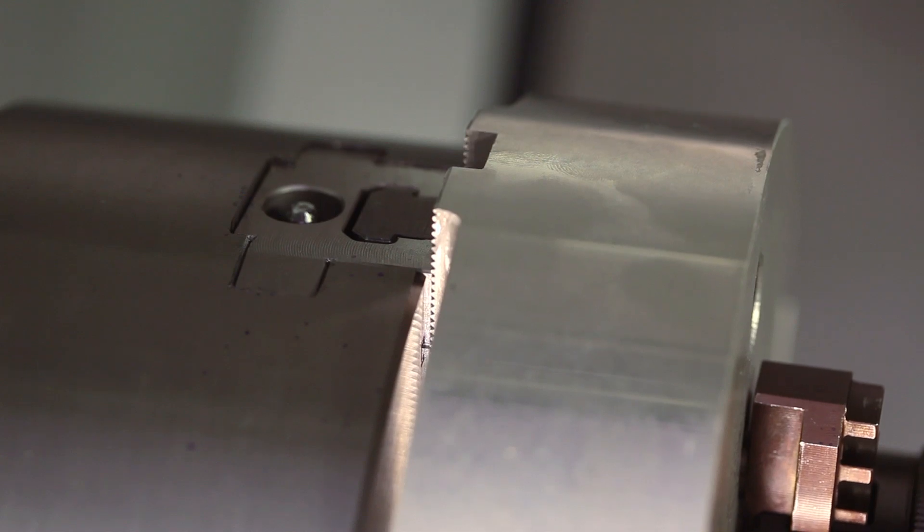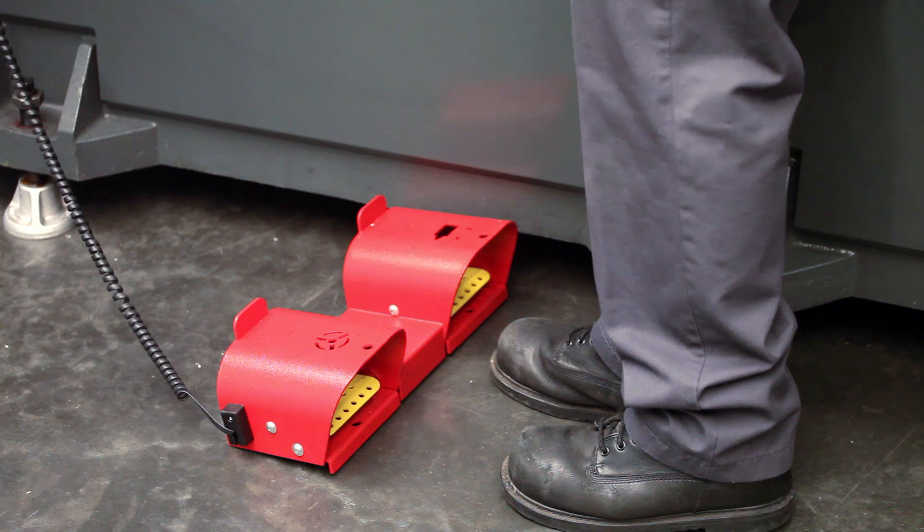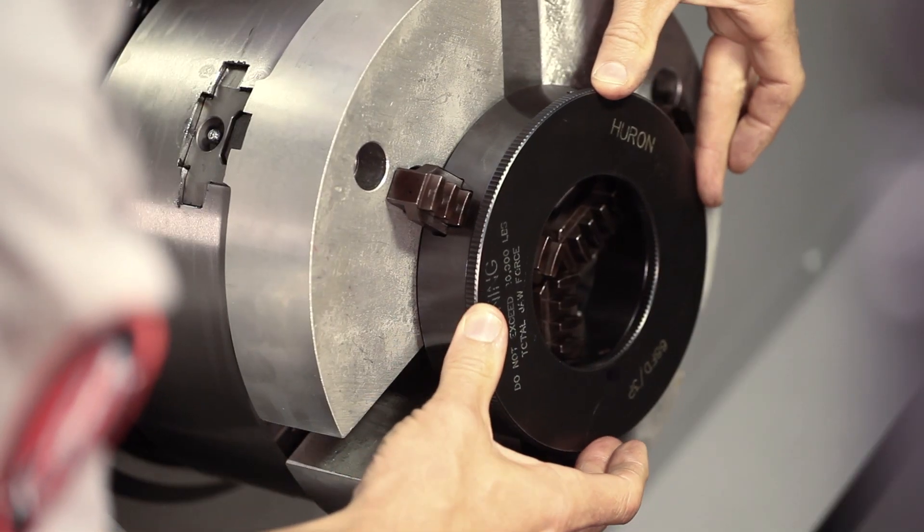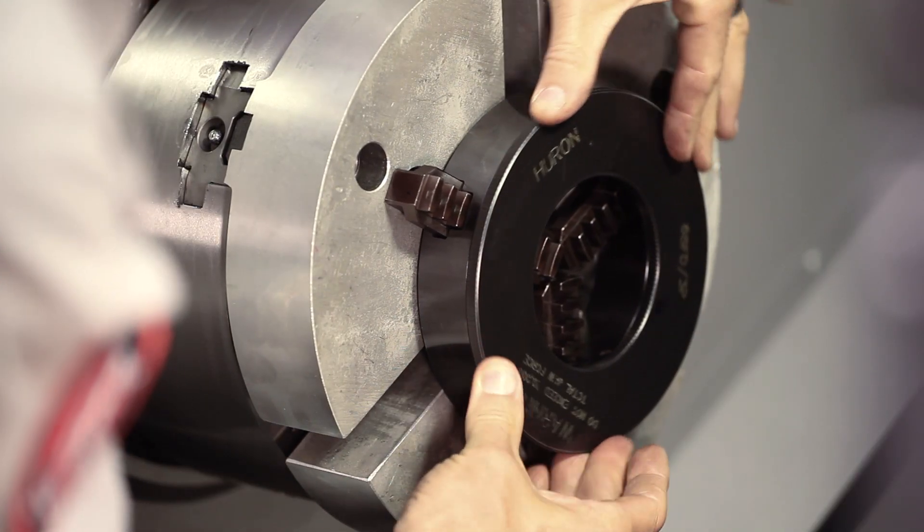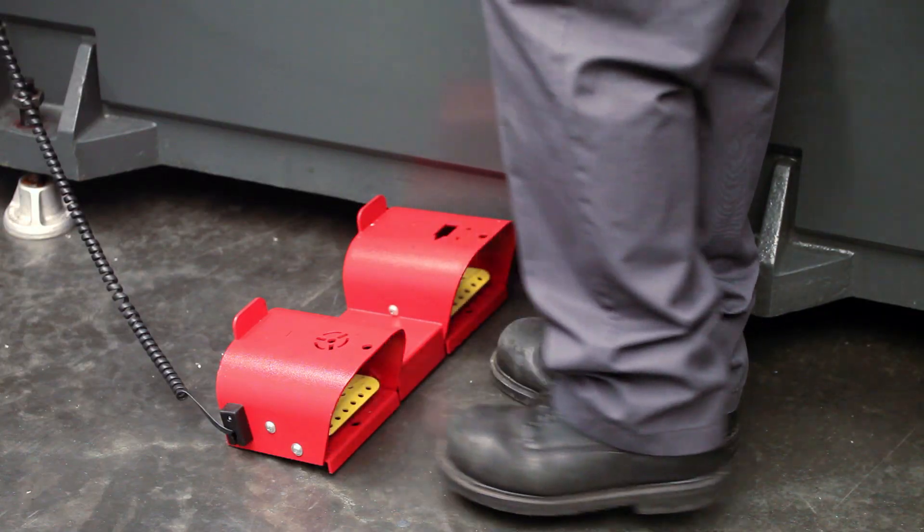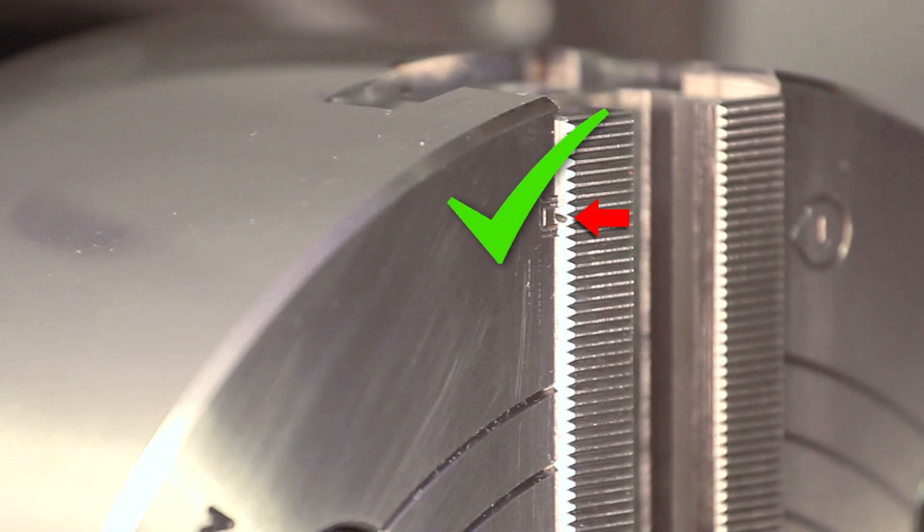However, the jaw stroke is not at the center of travel, so the boring ring will need to be adjusted. To do this, unclamp the jaws and rotate the threaded body of the boring ring to adjust the position of the grippers. This time, with the chuck clamped, the jaws are in the middle of their stroke, right where they need to be to cut these jaws.